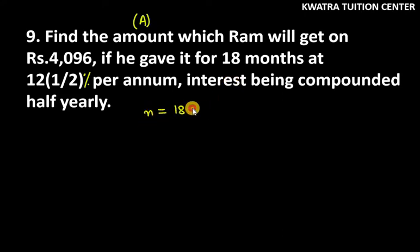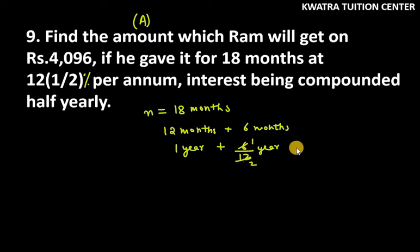So this is 18 months. 18 months means 12 months plus 6 months. 12 months is equal to 1 year. So this means 1 year plus 6 over 12 years. If we have to change the month to year, we divide by 12. So this will be 1.5 years, or you can write it as 3 over 2 years.